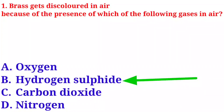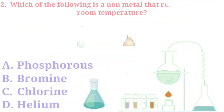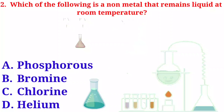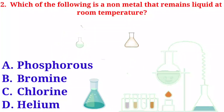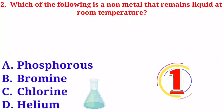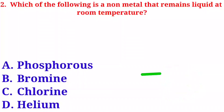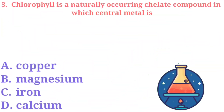The correct answer is option B, hydrogen sulfide. Question number two: which of the following is a non-metal that remains liquid at room temperature? Option A: phosphorus. Option B: bromine. Option C: chlorine. Option D: helium. The correct answer is option B, bromine.